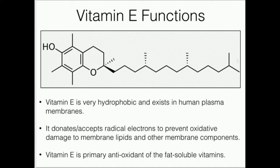In your membranes, you have a variety of fatty acid tails — saturated, monounsaturated, and polyunsaturated. Polyunsaturated fatty acids, whether they're in triglycerides, phospholipids, or free, are very susceptible to oxidation by reactive oxidative species, particularly free radicals, because of the multiple double bonds and the nature of the reactions of double bonds in that orientation.